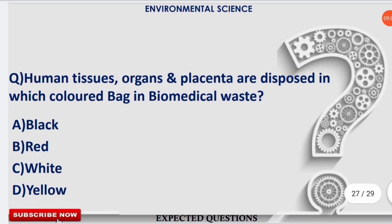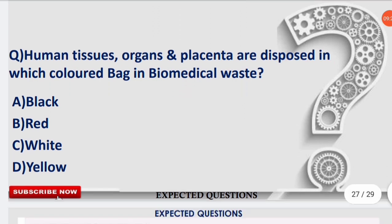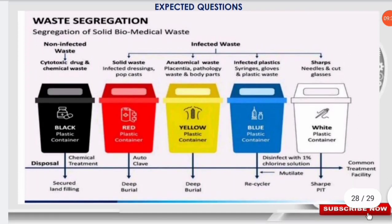The next question is from biomedical waste: human tissues, organs, and placenta are disposed of in which colored bag according to the biomedical waste rules? The correct option is D — yellow color bag. Yellow color containers are used for human tissues, organs, and placenta.